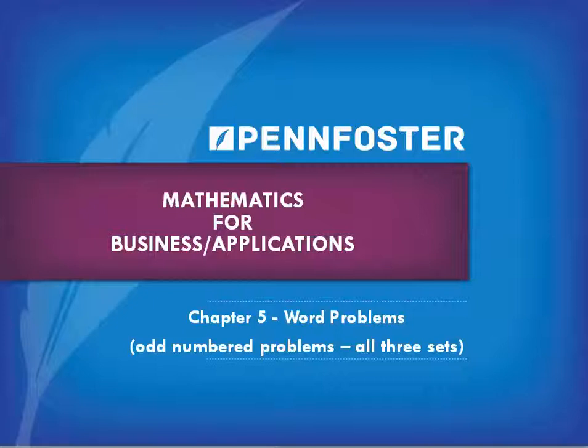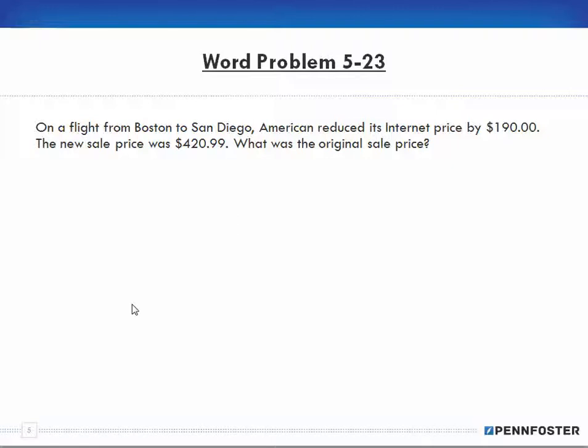We begin with problem 5-23. It says on a flight from Boston to San Diego, American reduced its internet price by $190. So immediately I'm thinking about the price that American would sell and it's reducing its price. Reduced means minus. The new sale price was $420.99, so the original price minus 190 equals $420.99.